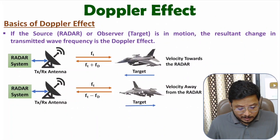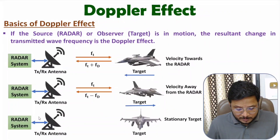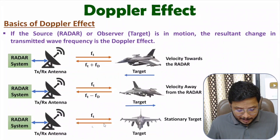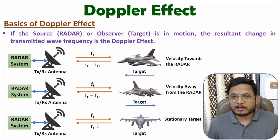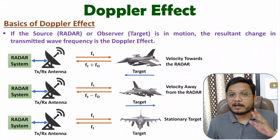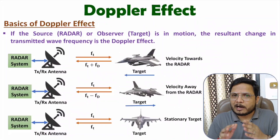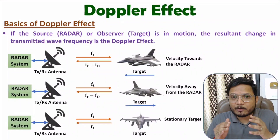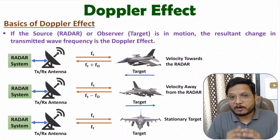If the target is stationary, the radar will observe that there is no deviation between the transmitted and echo signal. Based on frequency deviation, the radar can identify the direction of motion as well as calculate velocity. Now I will derive the equation of frequency deviation based on the velocity of the target.